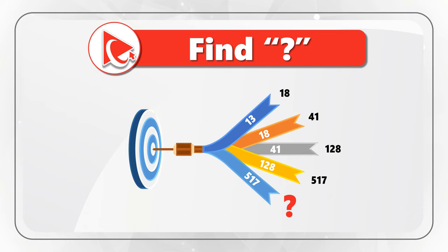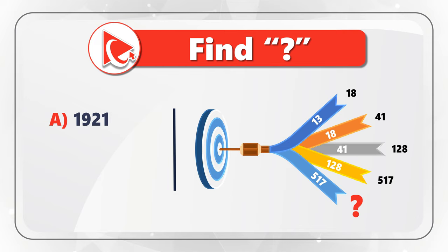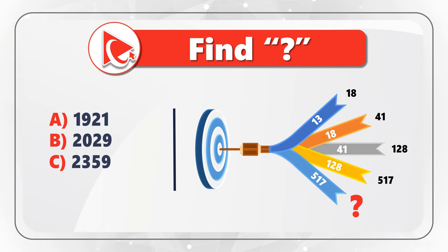Then comes the missing number you need to calculate and select from four possible choices: choice A 1921, choice B 2029, choice C 2359, and choice D 2590. Give yourself a moment — maybe pause this video to see if you can calculate the answer.